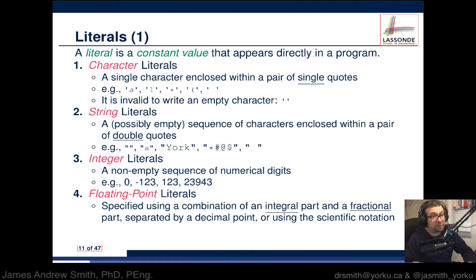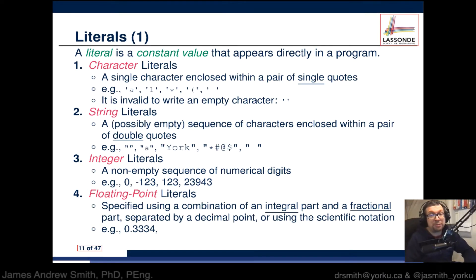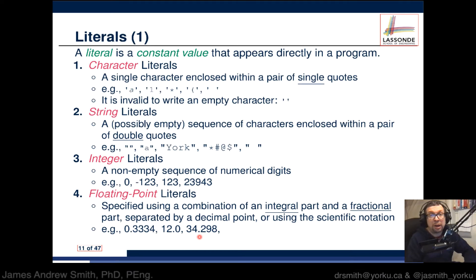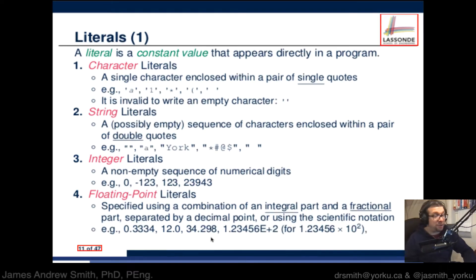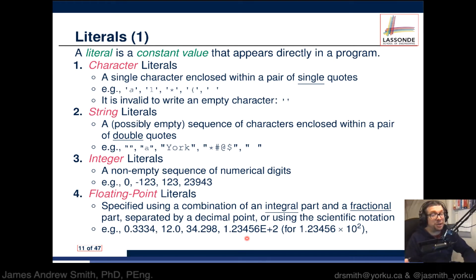You can also have floating point literals, and these are numbers that have both the whole part to the left of the decimal point and the decimal part to the right-hand side. Examples would be 0.334 — there's the decimal point, with the fractional part on the right and the integer whole number on the left — 12.0, which is another floating point number, and 34.298. You can also have scientific notation represented numbers as well.